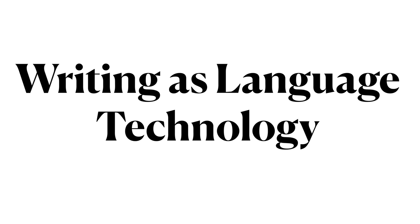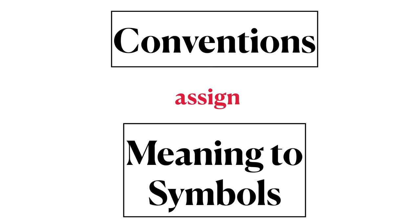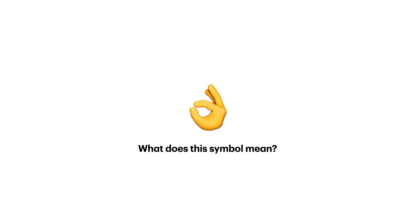This is Ling 270, Language, Technology, and Society. We are now going to examine writing as a language technology, specifically focusing on the fact that conventions assign meaning to symbols. In the absence of human conventions, symbols do not possess inherent meaning. We're specifically going to look at a number of symbols and explore what those symbols mean in various contexts.